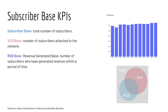Next we have Subscriber Base KPI. Subscriber base refers to the total number of subscribers in your network. However, not all of them are using the service, that's why we have real base — the number of subscribers who attach to your network regularly. And not everyone is generating revenue, that's why we have RGS base, or Revenue Generating Base: the number of subscribers who have generated revenue for your business.